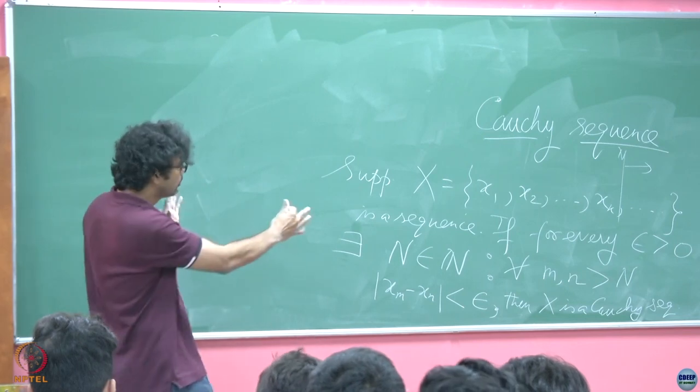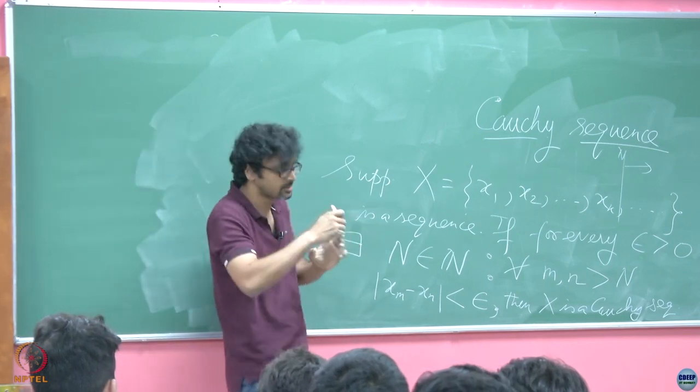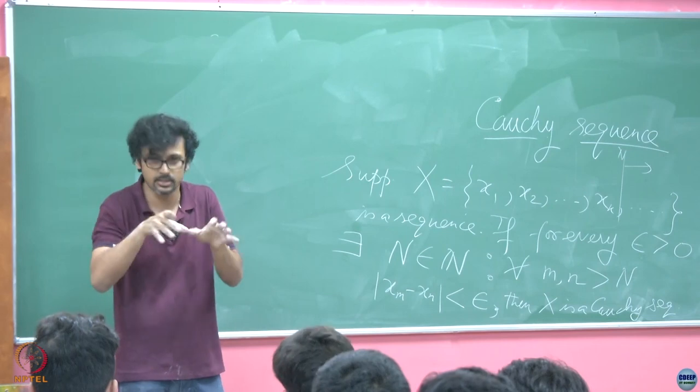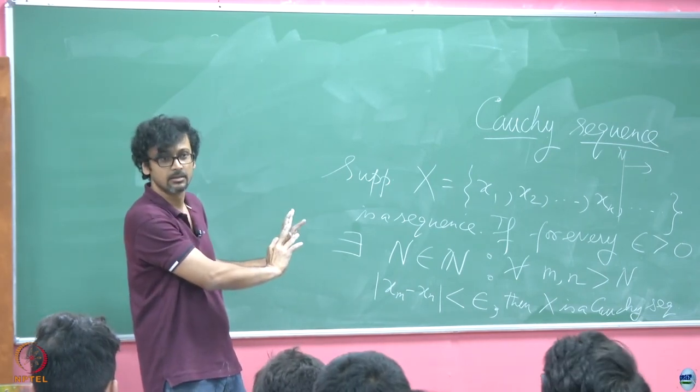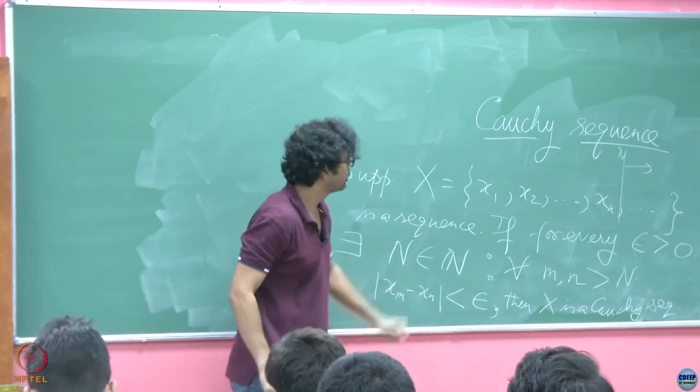It is only when you choose epsilon to be smaller and smaller that my job gets tougher. So your job is to throw the most challenging epsilon possible at me, and if I am still able to spit out some N so that this is true, then I approve that the sequence is Cauchy and won the game. If not, then you win the game. It is not Cauchy. That is the way to view these definitions. Do not think of them like some terms being thrown in aside just for confusing people. There is enough clarity there. That is very important.